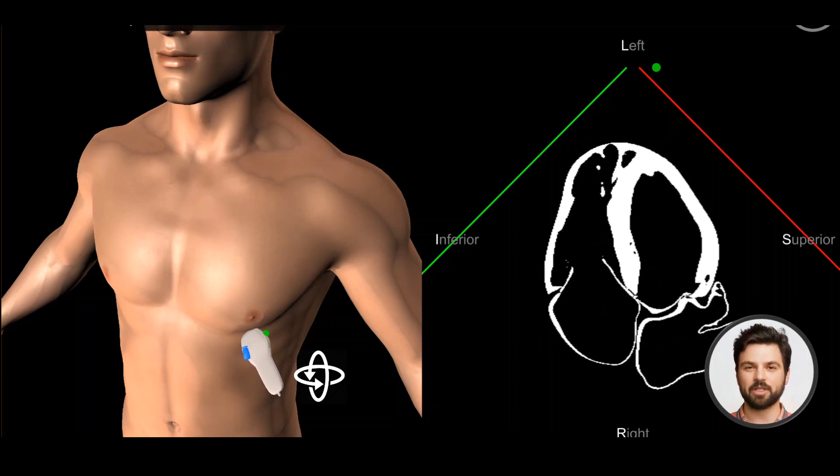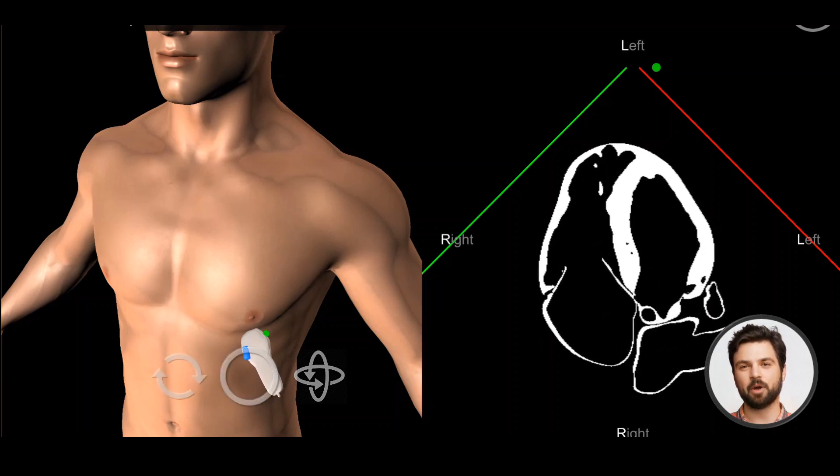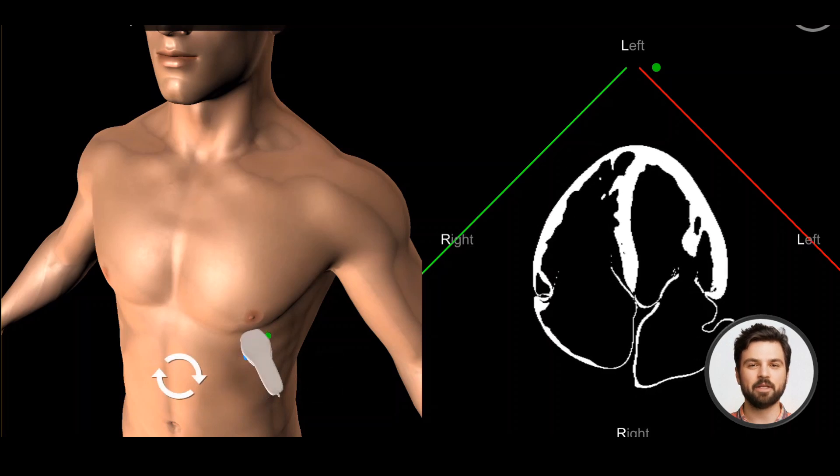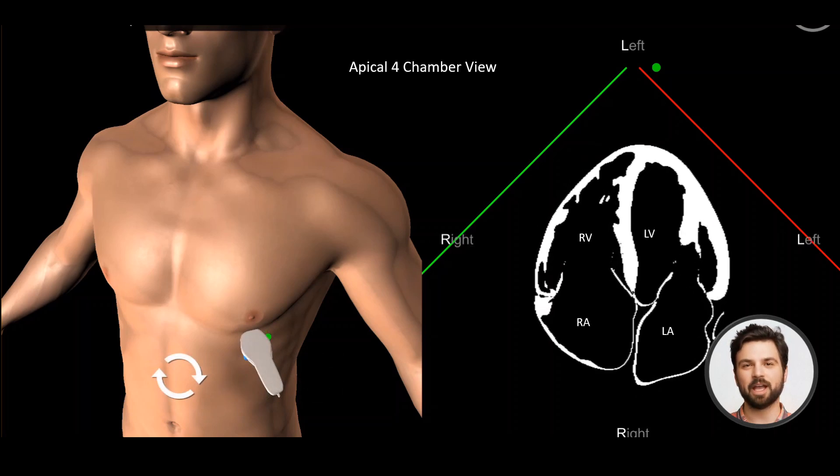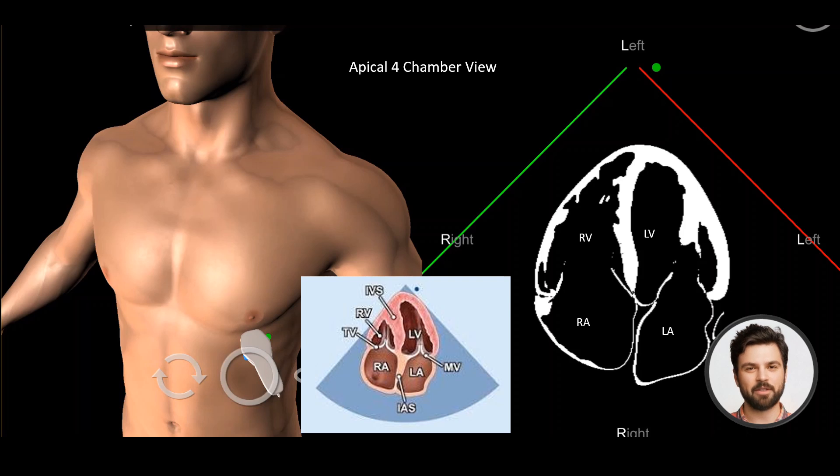The probe should be angled cephalad with the probe orientation marker facing the patient's left flank. The ultrasound beam should cut through the apex of the heart, the ventricles and atria.